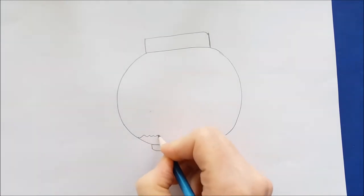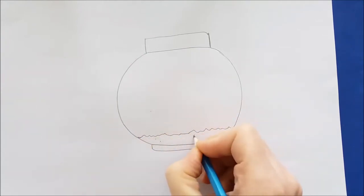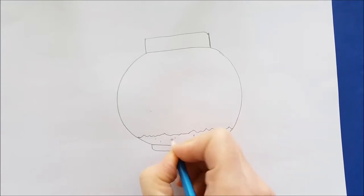Then at the very bottom of the fishbowl, just draw a wavy line. This is going to be the sand in the fishbowl. And you can draw some little dots here and there.